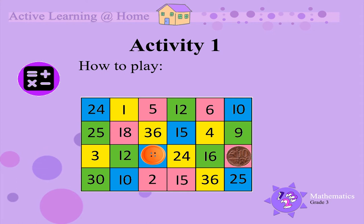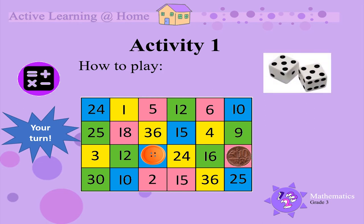Now it is your turn again. Roll the dice, look at the 2 numbers and multiply them together. There seems to have been a mistake — 5 times 5 is 25, not 30.